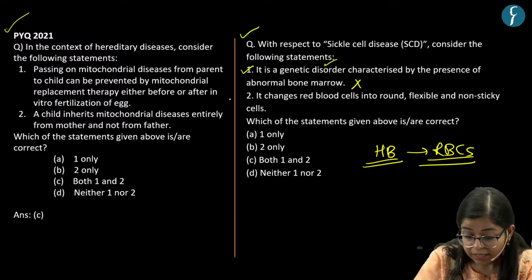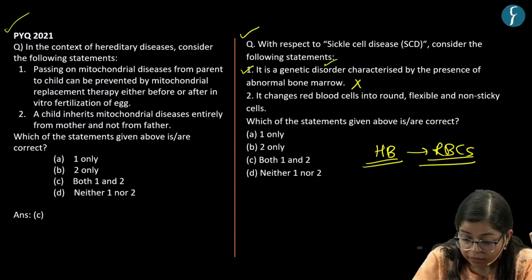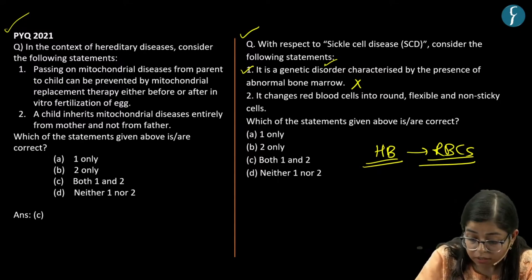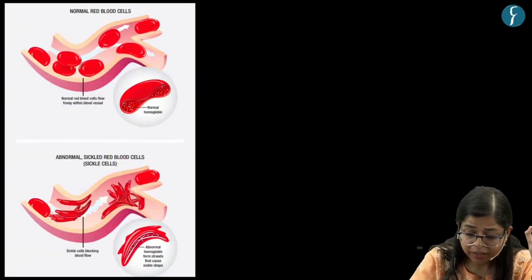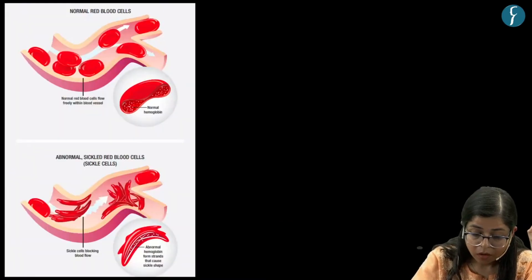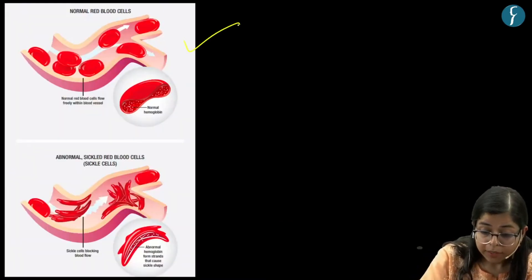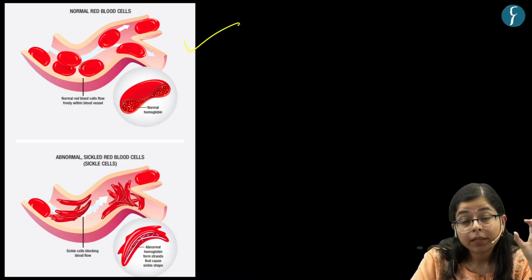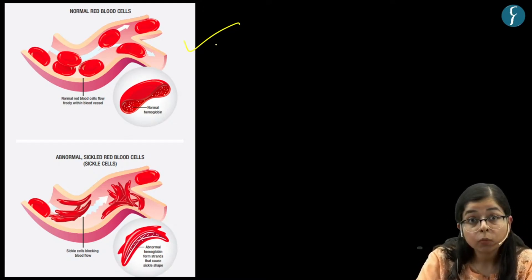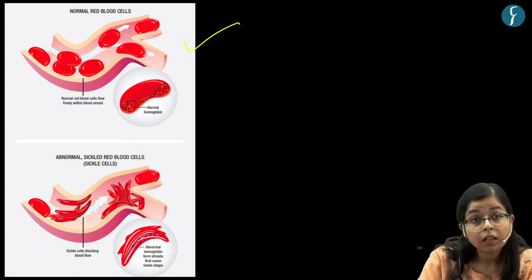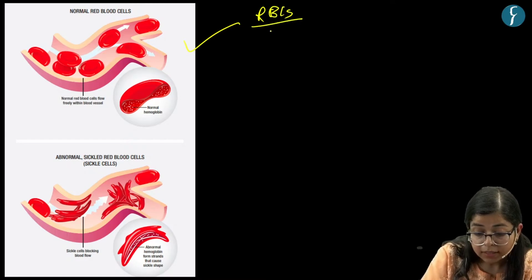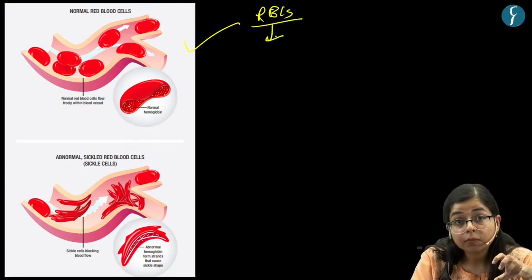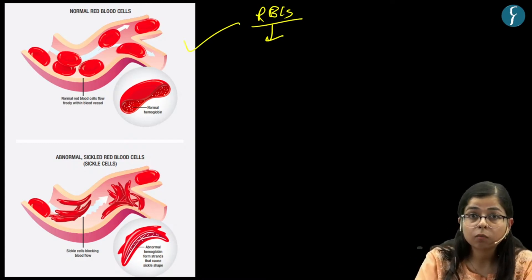The second statement says that it changes red blood cells into round, flexible and non-sticky cells. This is also an incorrect statement. What happens is that in any normal human, red blood cells are round and flexible. The work of RBCs is to transport oxygen from lungs to the various parts of the body.